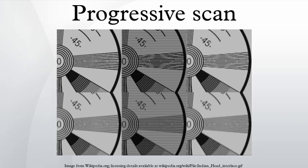The system was originally known as sequential scanning, when it was used in the Baird 240-line television transmissions from Alexandra Palace, United Kingdom in 1936. It was also used in Baird's experimental transmissions using 30 lines in the 1920s.